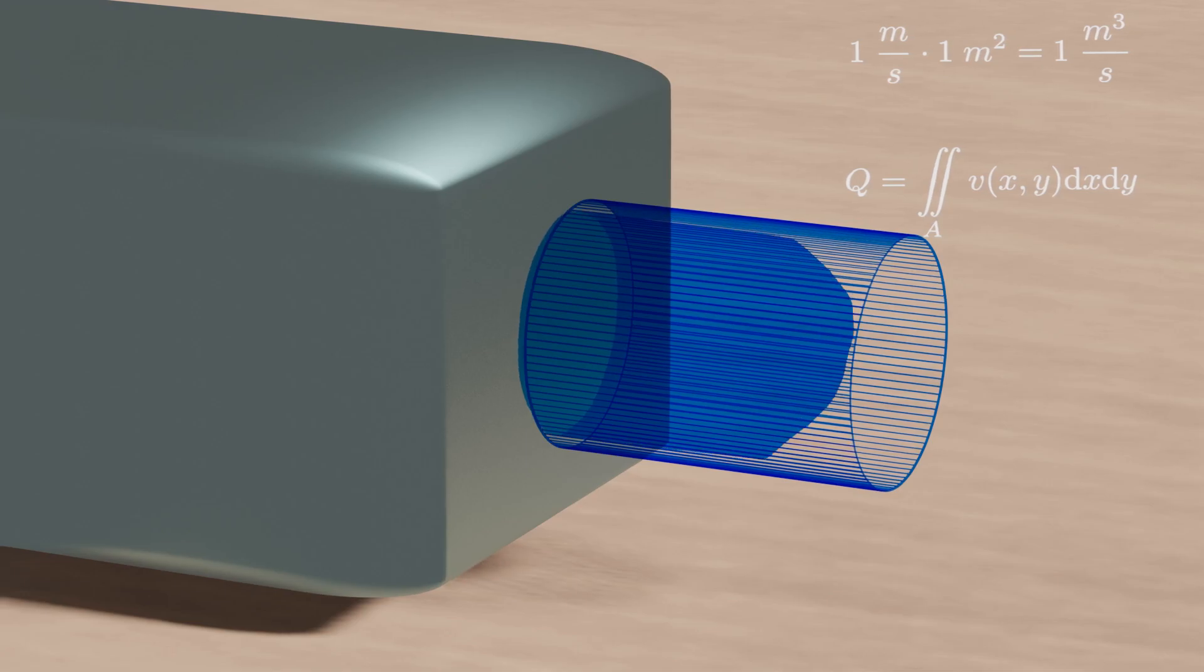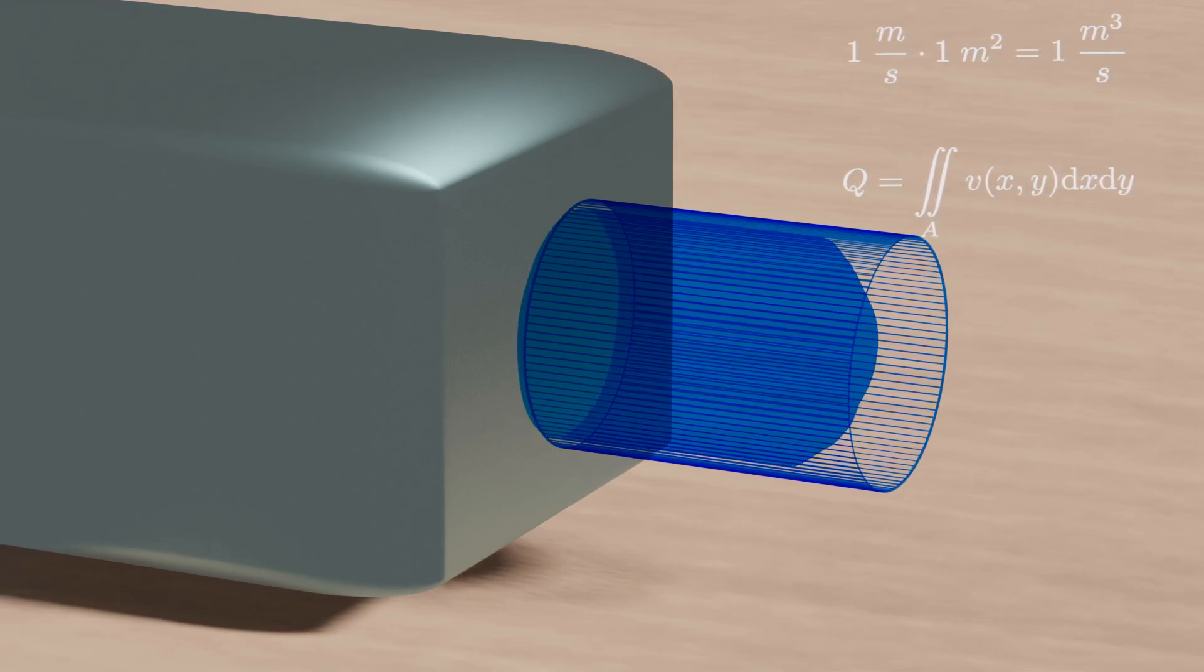Divide the cross-section to get smaller parts. The speed of the fluid will be similar for all molecules passing through one of the parts. So we can approximately calculate the flow through one of the parts if we multiply the speed of the fluid and the area of the part. Then we sum all of it and let delta x and delta y go to zero. And again, we will have a double integral to calculate the flow.